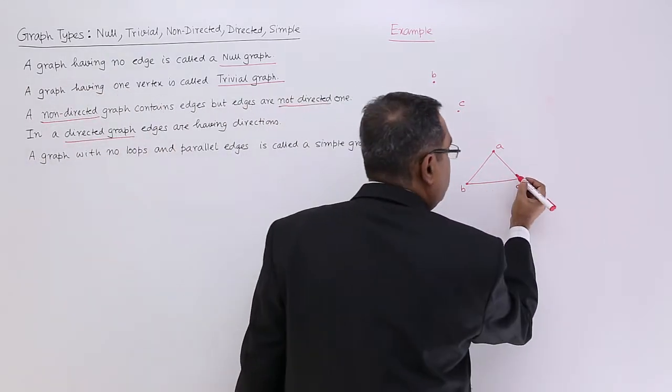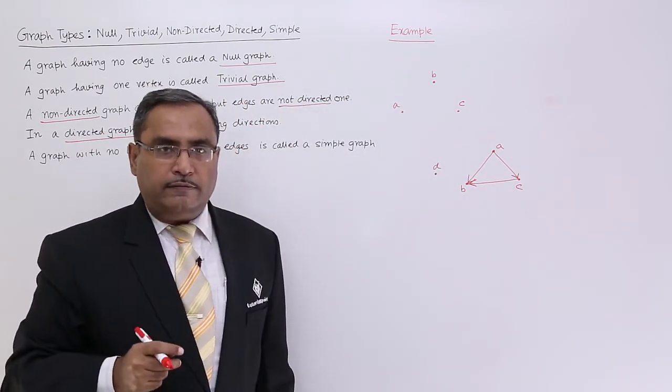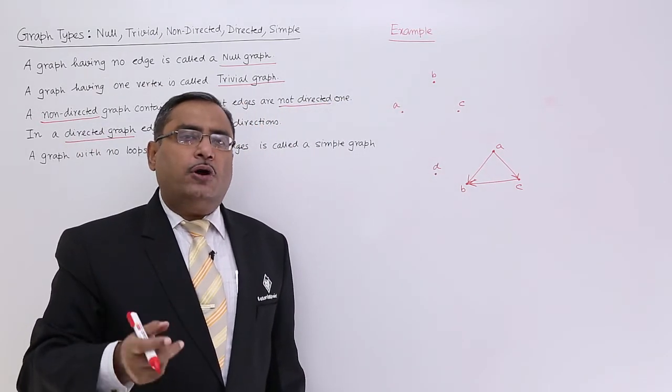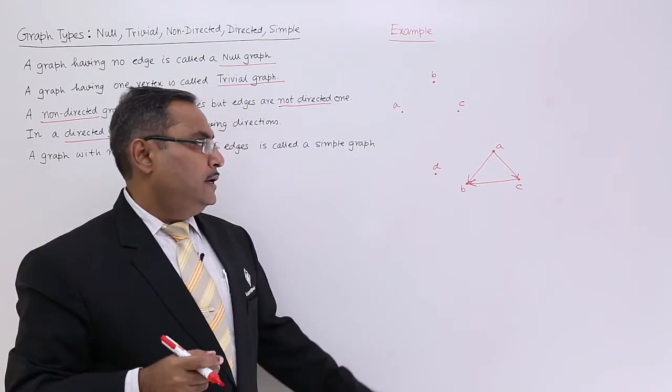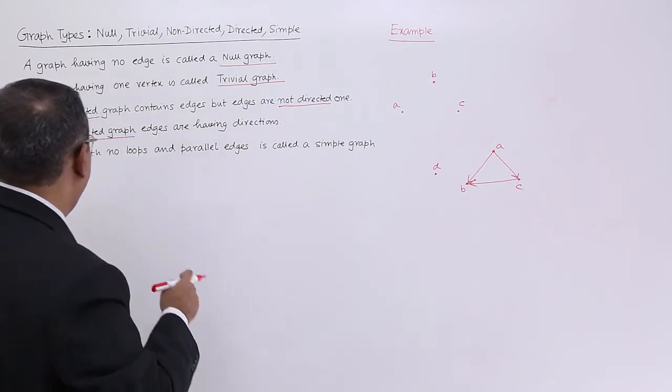Now, if I update this diagram, it becomes a directed graph. The directed graph can also be called a digraph in short. Here, these edges have certain directions, so that is known as a digraph or directed graph.